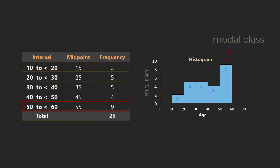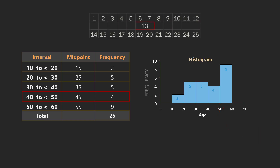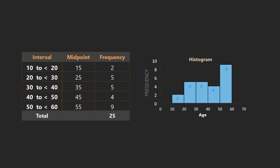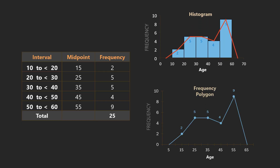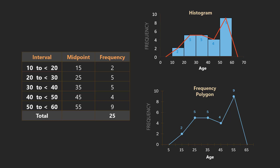The class with the highest frequency is called the modal class, while the class containing the middle value in the sorted data is the median class. The median class is the 40 to under 50 class because it contains the middle, which is the 13th observation. Note that the median class is not necessarily the middle class, but the class that contains the middle observation. We can obtain another graph by connecting the midpoints of the bars with straight lines and tying them to the horizontal axis — this is called a frequency polygon.